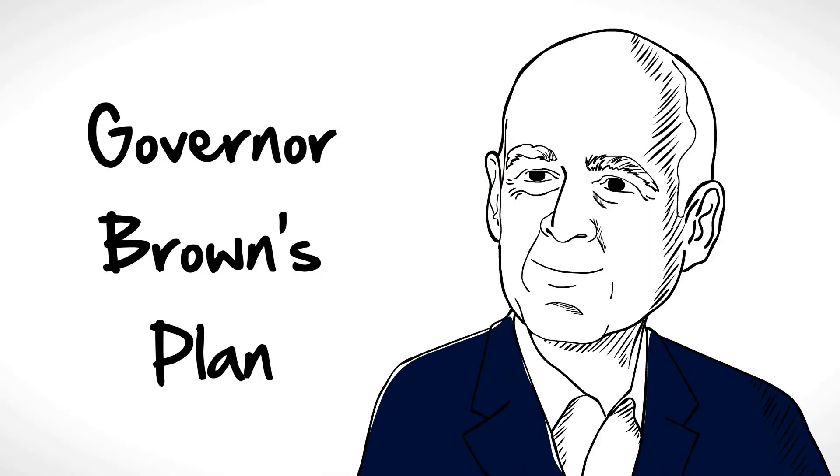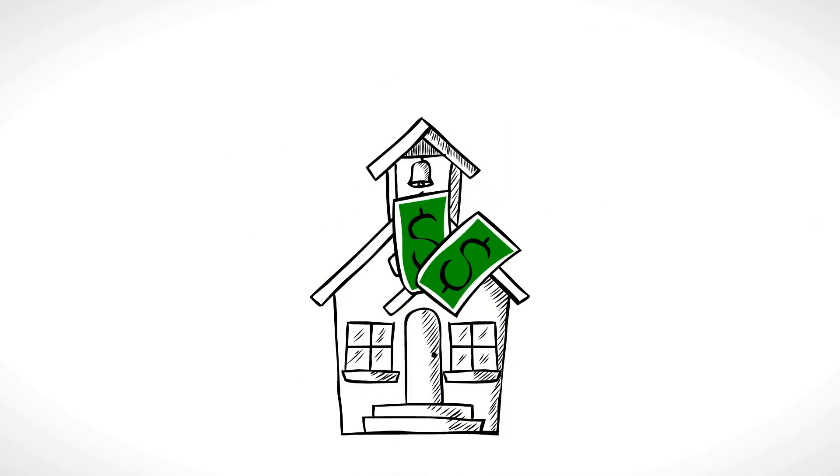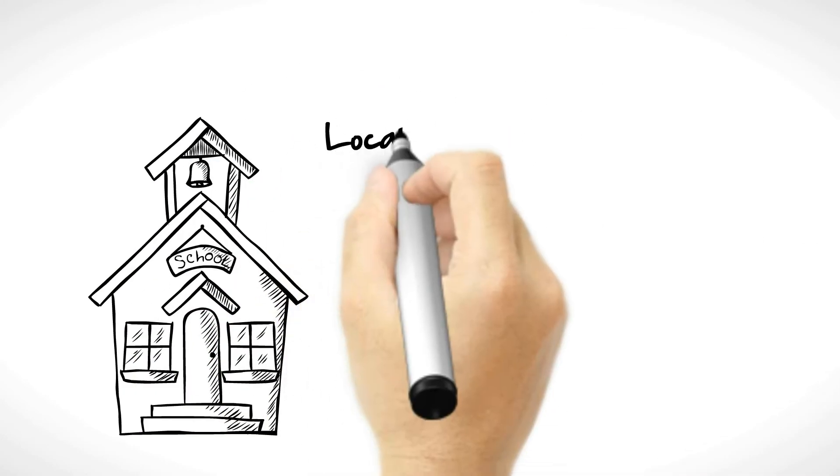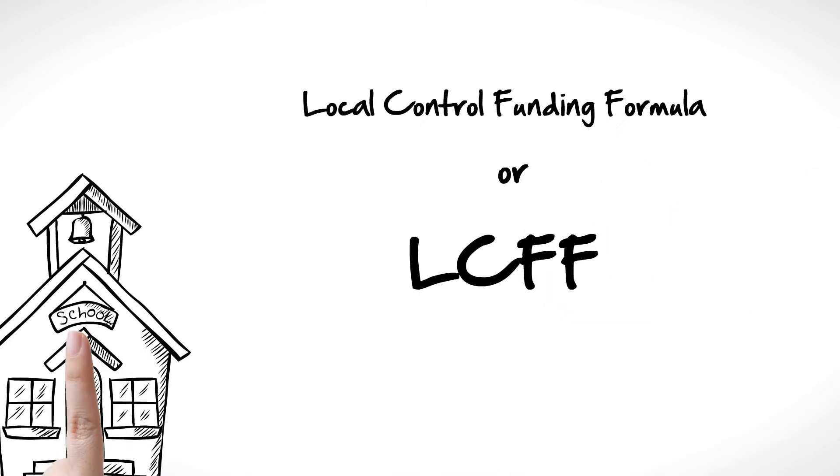The governor has a plan to fix these funding problems. He wants to improve the way we fund schools. The plan is called Local Control Funding Formula, or LCFF. The plan does the following.